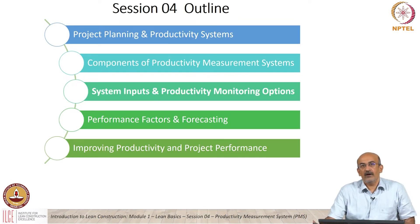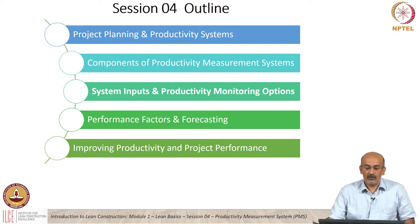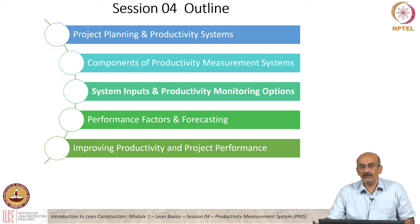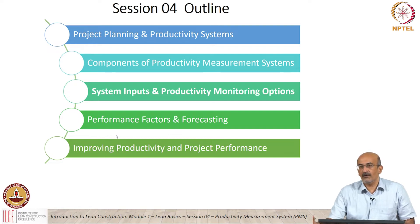Here is the outline: we will initially talk about project planning and productivity systems, the broad context, and get into detail on the productivity measurement system and its components. Then we will look at inputs and monitoring options, performance factors and forecasting, factors that influence productivity, productivity improvement from a project performance perspective, and how it fits in the lean context.